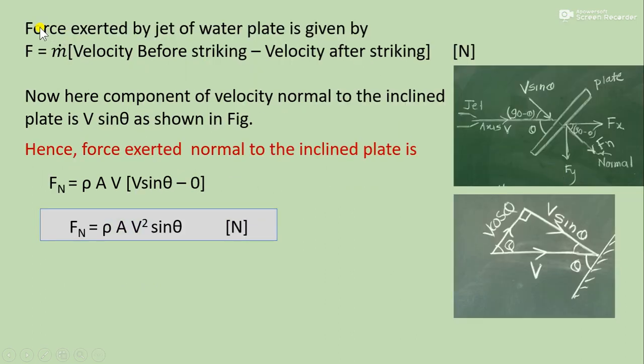By using impulse momentum principle, force exerted by the jet of water on the plate is given by F equals mass flow rate times velocity difference, that is velocity before striking and velocity after striking. Now here the component of velocity which is normal to the plate is V sin θ.